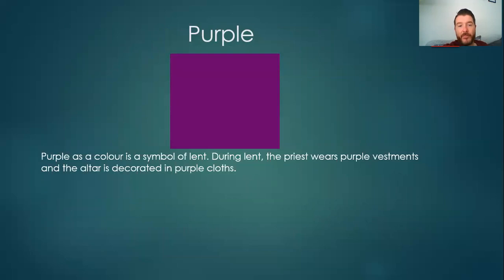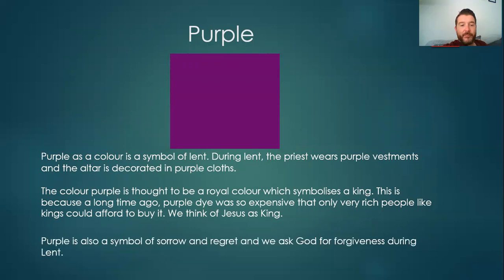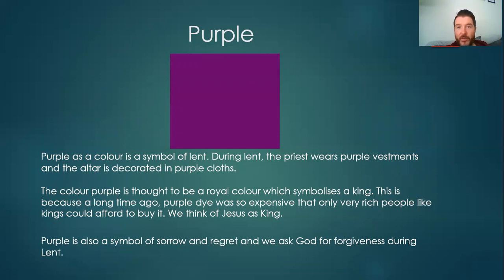The colour purple. Purple as a colour is a symbol of Lent. During Lent, the priest wears purple vestments and the altar is decorated in purple cloths. The colour purple is thought to be a royal colour which symbolizes a king. This is because a long time ago, purple dye was so expensive that only very rich people like kings could afford to buy it — and we think of Jesus as a king. Purple is also a symbol of sorrow and regret, and we ask God for forgiveness during Lent. So it reminds us firstly that Jesus is a king, but secondly — just like in Advent — it's a time for sorrow and for penitence, that's saying sorry. Because we're asking for God's forgiveness for all the things we do wrong. We're cleaning ourselves during Lent and getting ourselves closer to God.